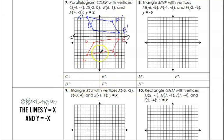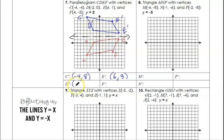We'll write the coordinates of the image: C prime is negative four, eight; E prime is six, three; D prime is negative two, four; and F prime is four, seven. So you see examples of reflecting over vertical lines versus horizontal lines — pretty easy to do.